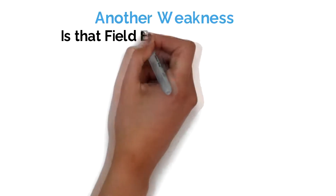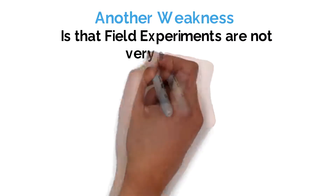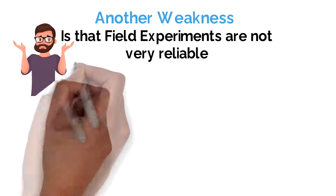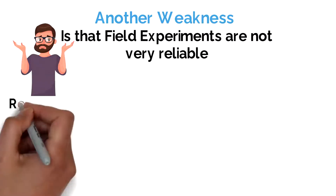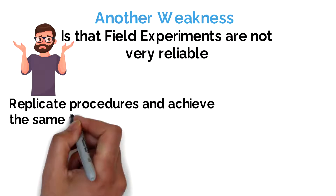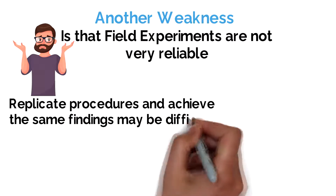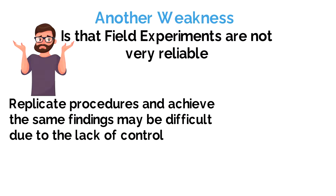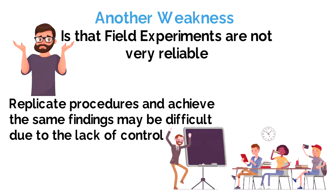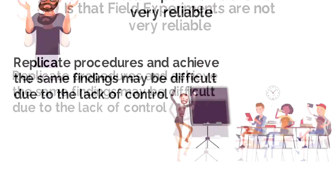Another weakness is that field experiments arguably are not very reliable. This is because there is not a lot of control and no complete standardised procedure. Therefore, it is harder to replicate in exactly the same way, and therefore it will be harder to find the same findings again.